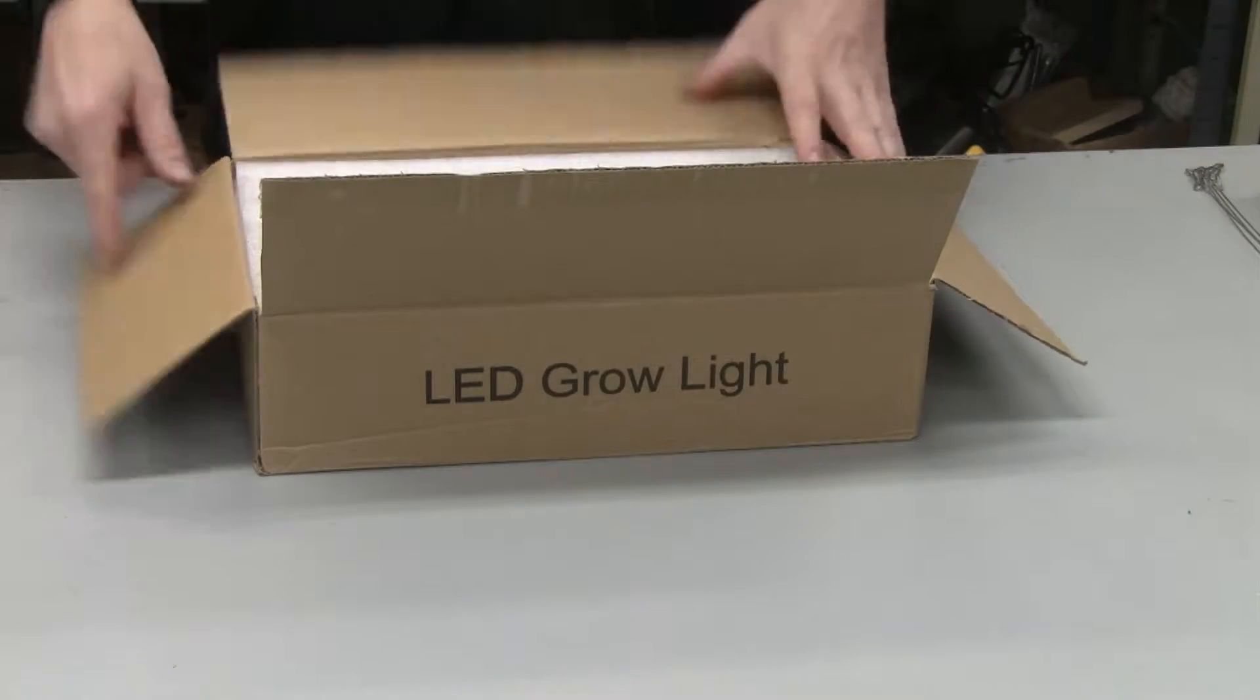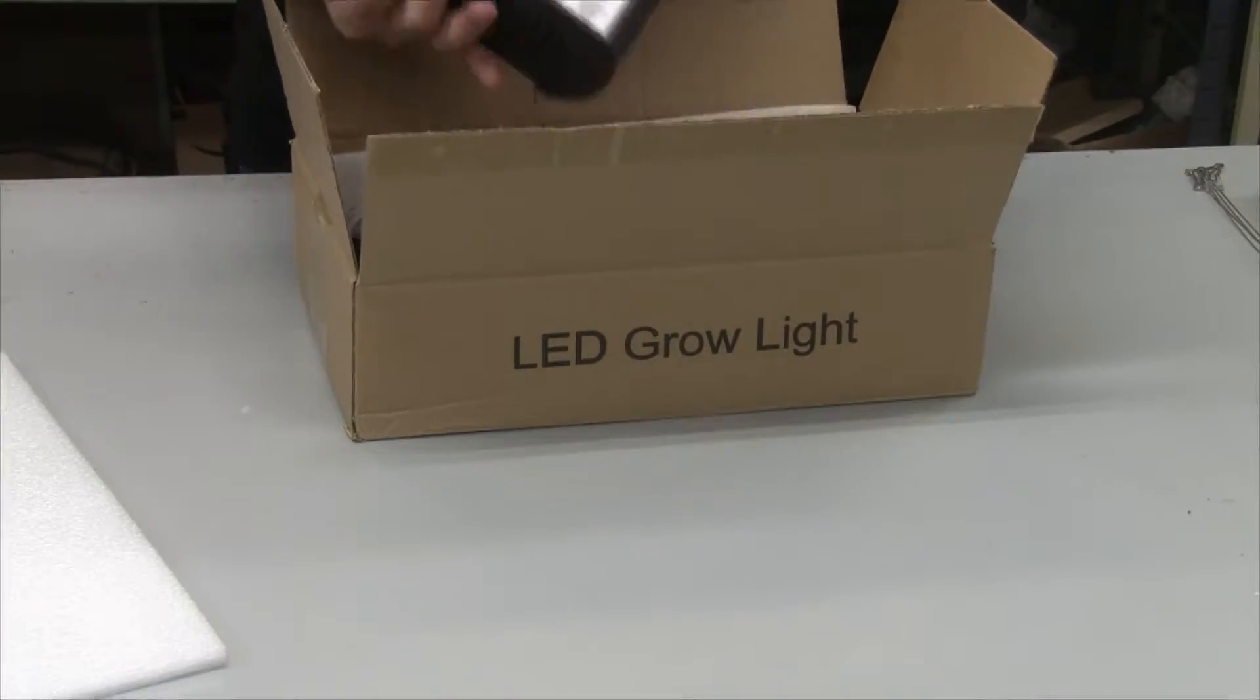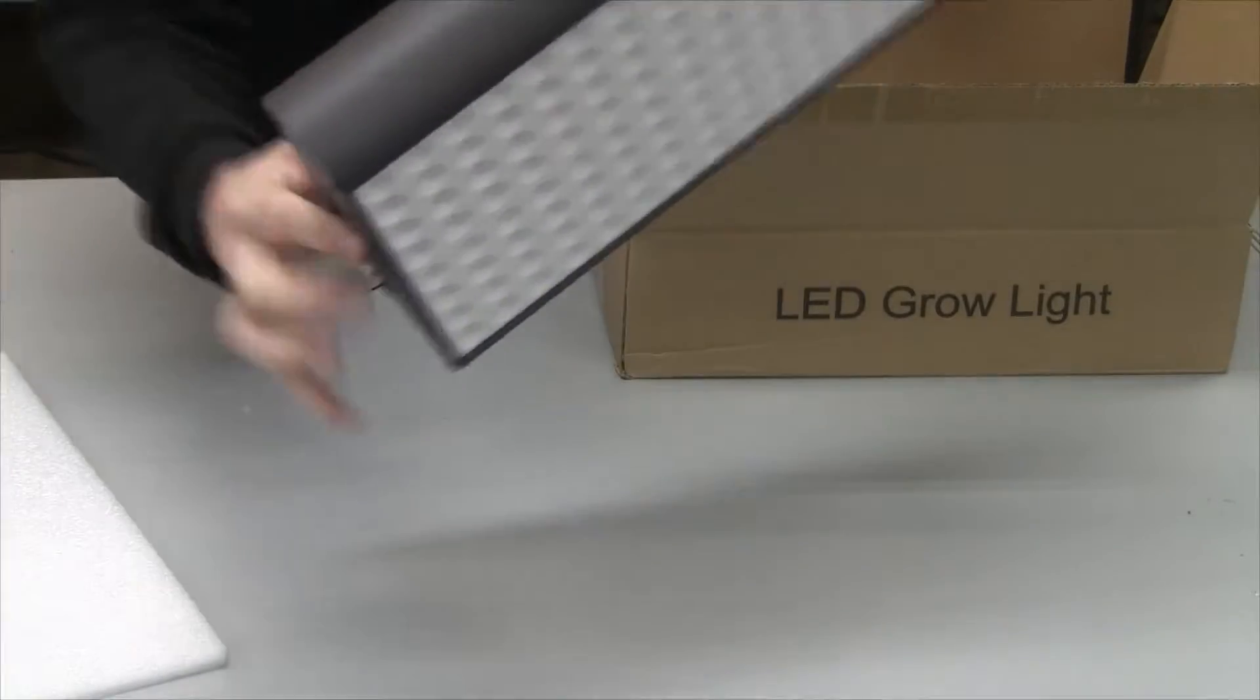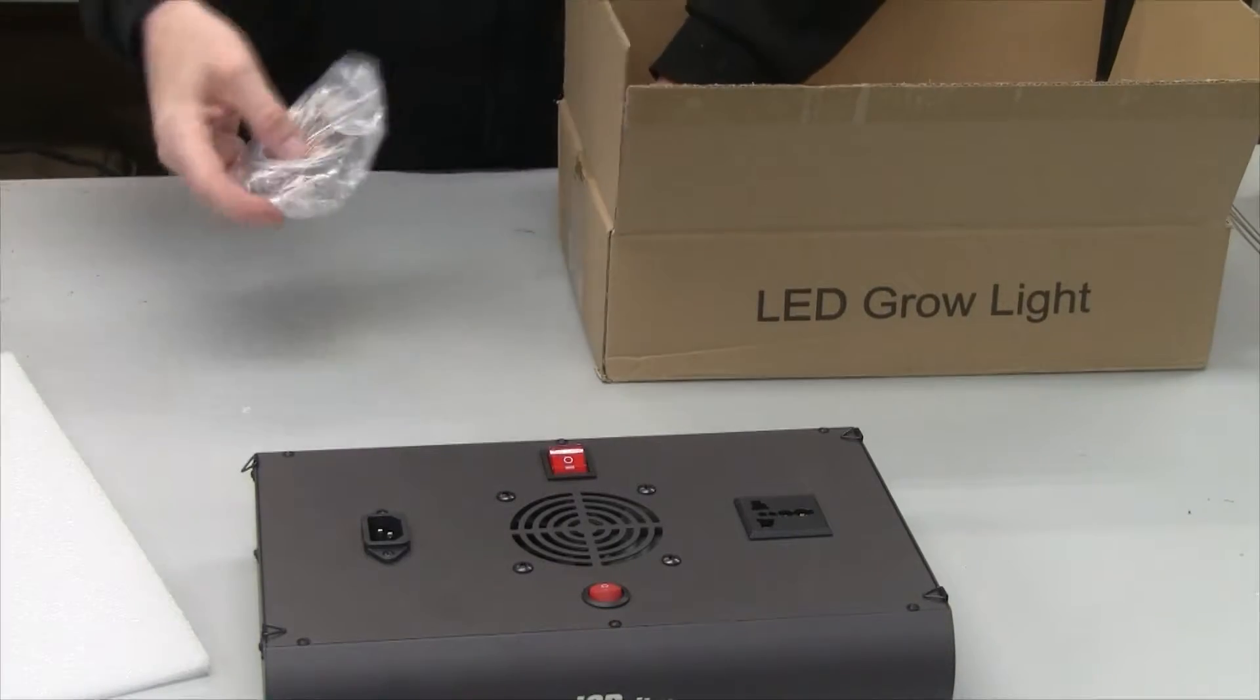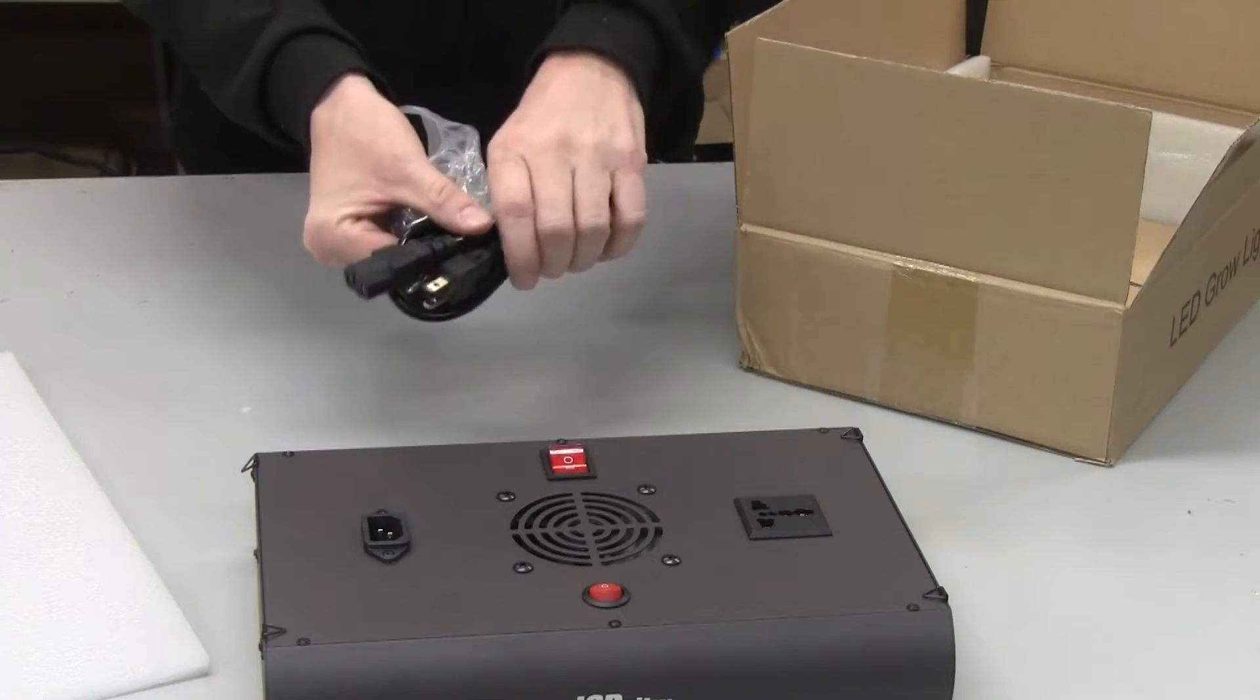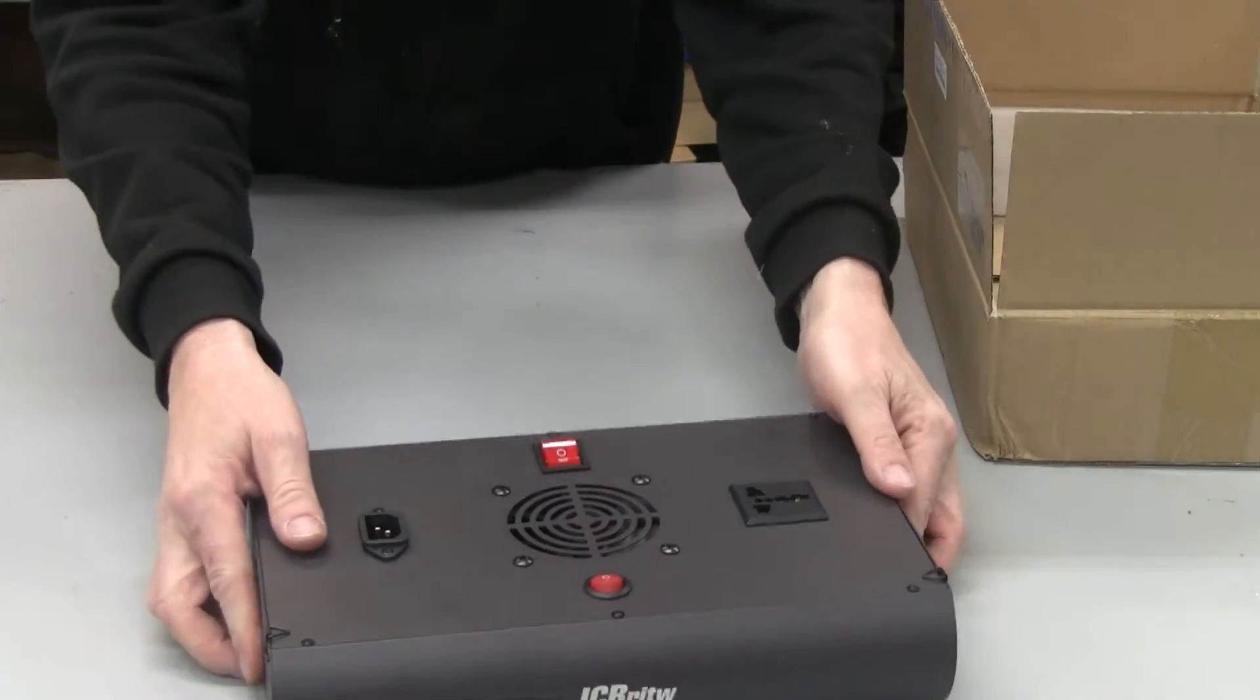I'll open it up really quick here, and here is the grow light itself with their logo on the front there. It comes with the hanging hooks and the power cord, so I'll measure the power cord and give you the length on that, and we'll power this thing up after a closer look at the LEDs and the unit itself.